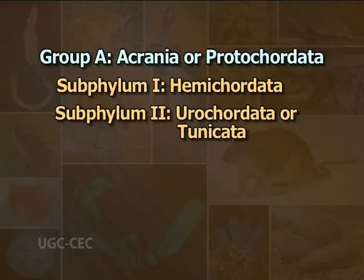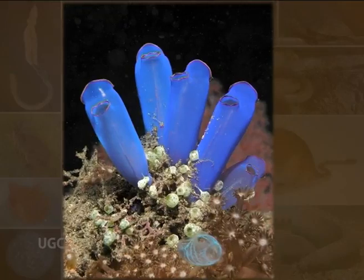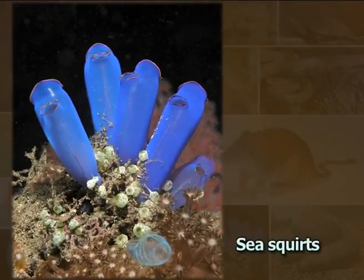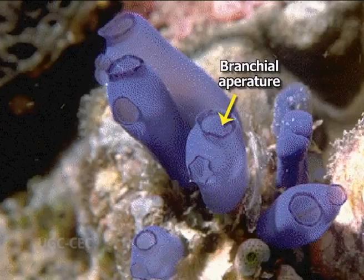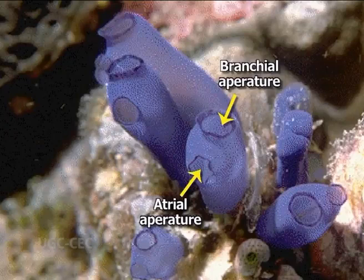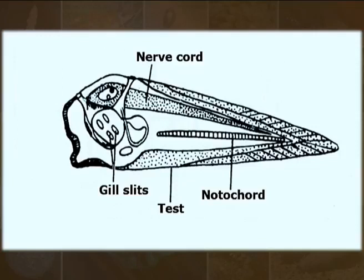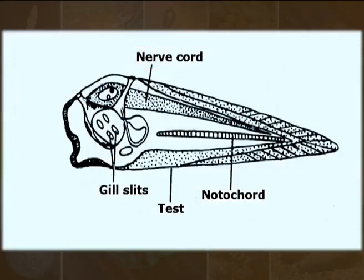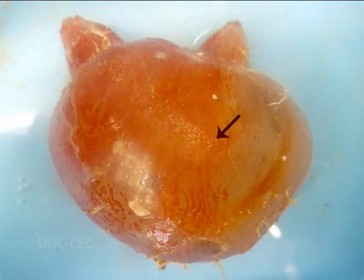Sub-phylum 2: Urochordata or Tunicata — in Greek, oura means tail and coda means tail. These are exclusively marine and cosmopolitan, commonly known as sea squirts. An anterior branchial aperture and a dorsal atrial aperture are commonly present. Coelom is completely absent. A minute free-swimming tadpole larva possesses notochord and nerve cord only in the tail region. Respiration occurs by gill slits. Adults are sac-like, covered with a tunic or test. Sexes are united. Fertilization is external.